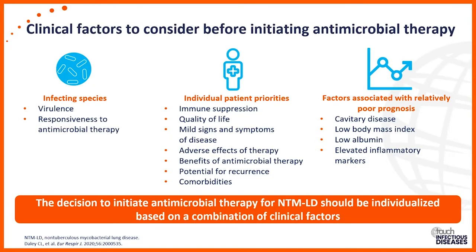There are many individual patient priorities to consider: the comorbidities the patient may have, other preexisting lung disease, if they're on any immunosuppressive agents, or if they have an acquired immunodeficiency. We also consider other drugs that may interact with the regimen, their CT scan, pulmonary function tests, and symptoms. We may decide to watch someone cautiously if we're not going to treat them.